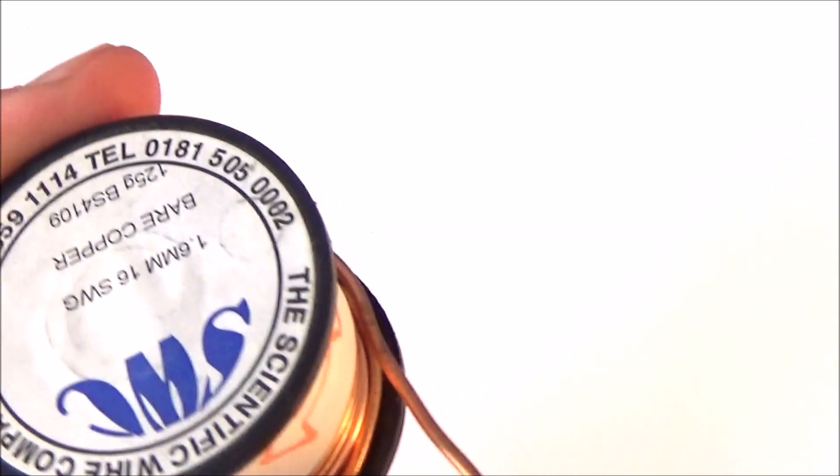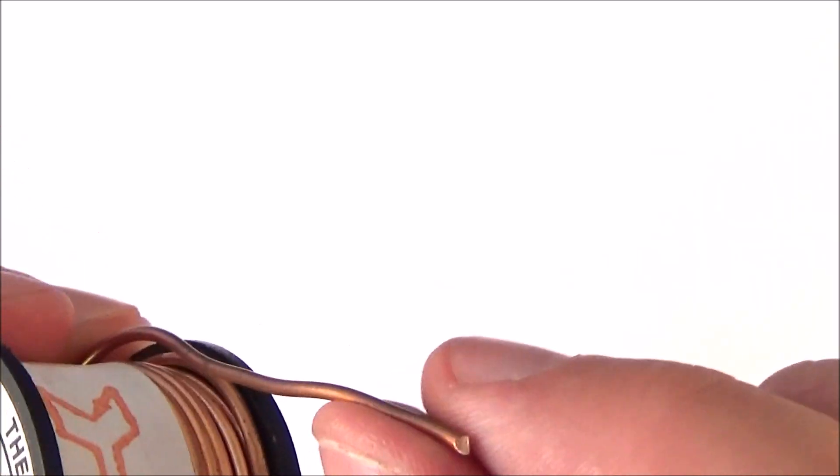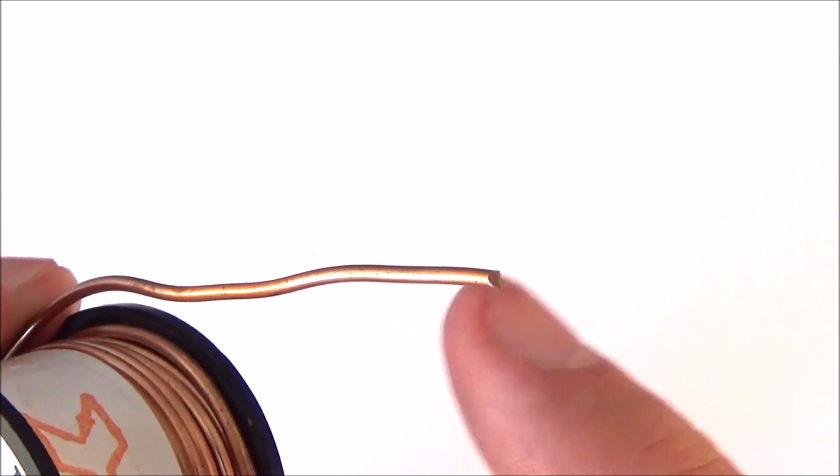So here I have some thick copper wire, and what I'd like to consider is a small section of this which has a current flowing through it.